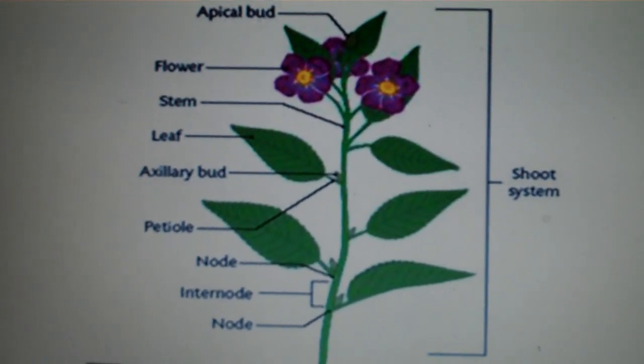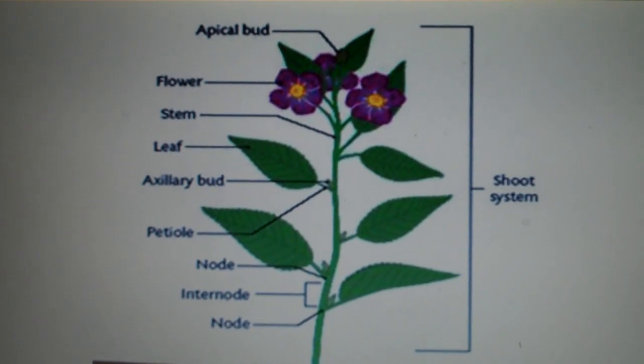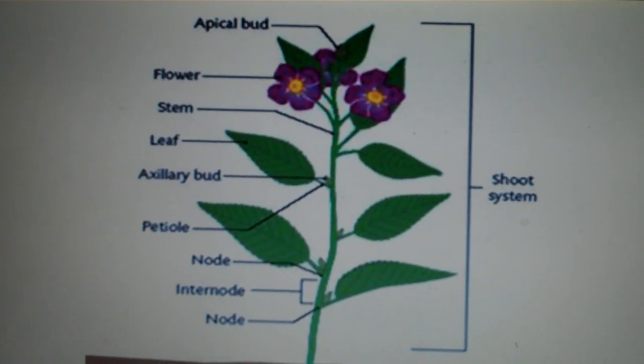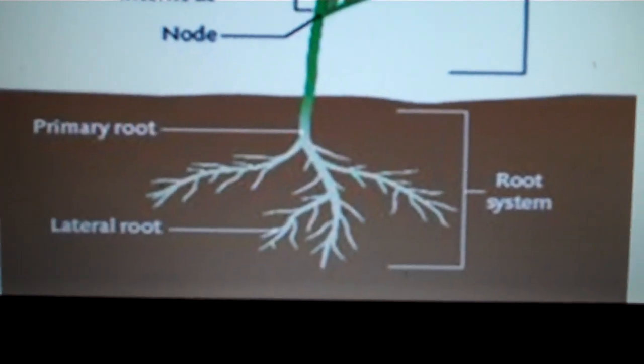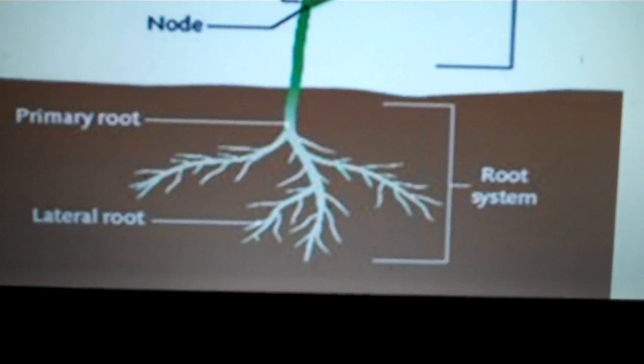We have the shoot system which is basically above ground consisting of the stem and leaves and flowers, and then we have the root system which consists of the primary roots and lateral roots.